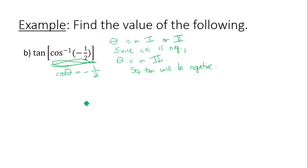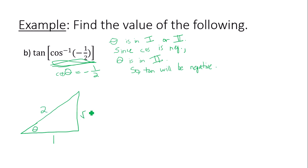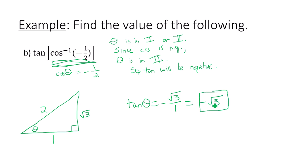Let's draw our triangle using the inner inverse trig function with angle theta. Cosine of one half is adjacent over hypotenuse, so we have one and two. This is actually a 30-60-90 triangle, so without even using the Pythagorean theorem, I know the other side is square root of three. Tangent of theta is opposite over adjacent — square root of three over one. But remember, tangent is negative in quadrant two, so throw a negative sign out front. The answer is negative square root of three.